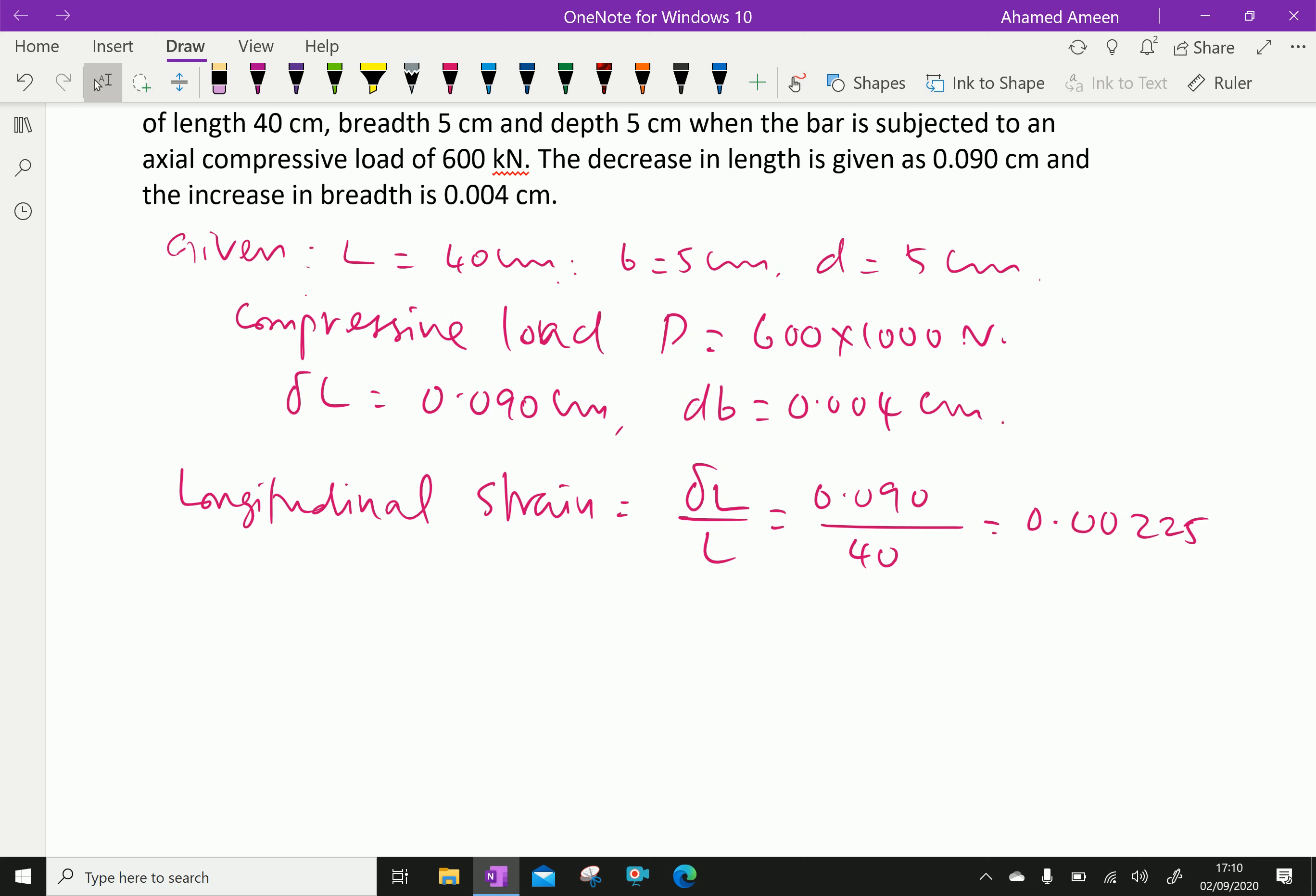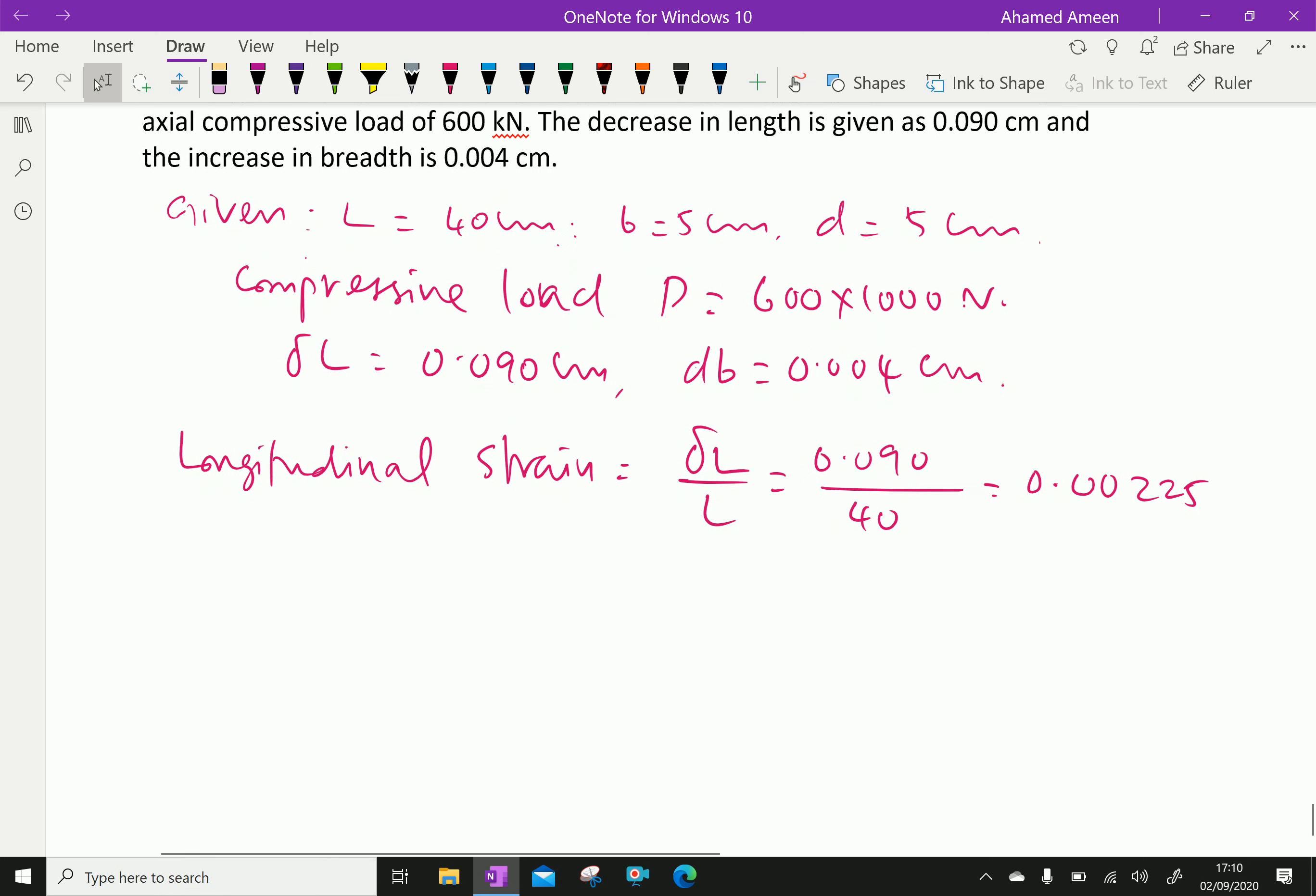Next, lateral strain is delta B over B, 0.004 over breadth is 5 cm, equal to 0.0008 lateral strain.